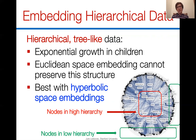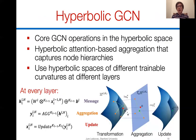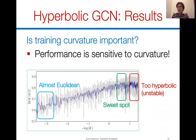Looking at the mathematics, we find that hyperbolic spaces and hyperbolic embeddings allow us to embed hierarchical tree-like structures. We have developed hyperbolic graph convolutional neural networks that perform neural network operations in hyperbolic space. We even allow our hyperbolic space to have trainable curvatures in different layers, which allows us to smoothly interpolate between Euclidean space and fully hyperbolic space with high curvature.